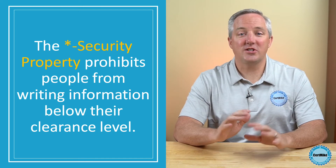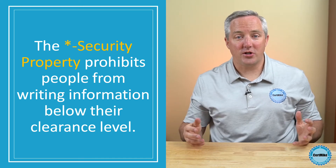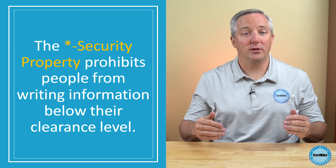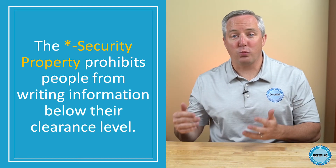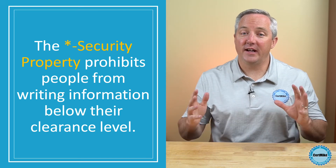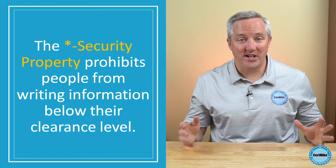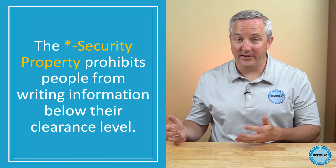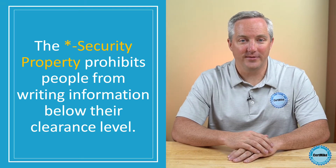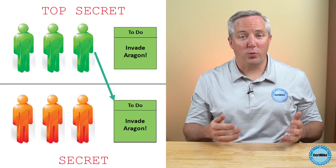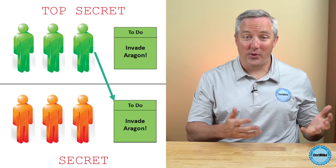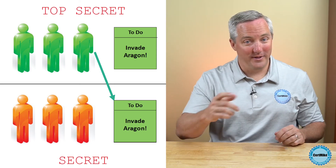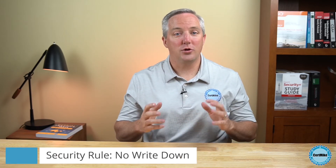The second rule of the Bell-LaPadula model is the star security property. It says that someone should not be able to write information to a lower security level than their clearance. For example, a user with a top secret clearance should not be able to write information to a secret file. We do this to prevent information leakage — we don't want someone to intentionally or accidentally write sensitive information to a lower-security file, which would be a confidentiality violation. We summarize this rule as: No Write Down.